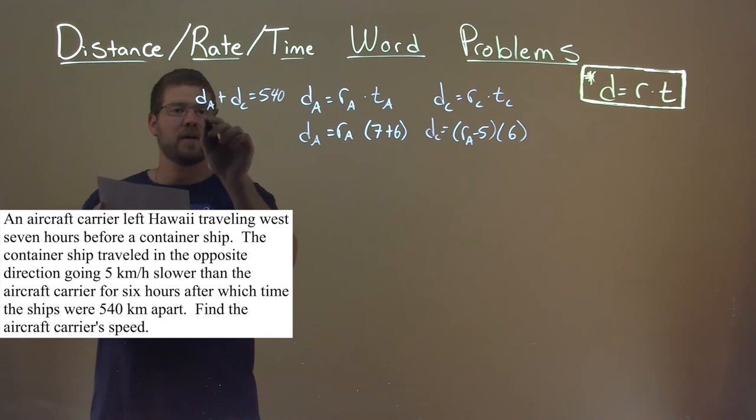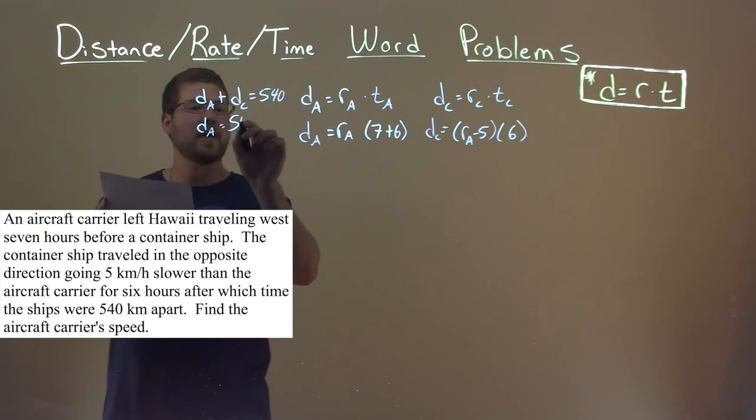If we get D of A by itself, D of A is equal to, we'll subtract D_C to both sides, that's 540 minus D sub C.